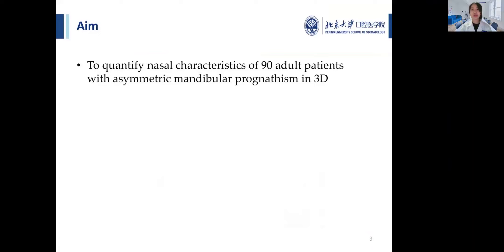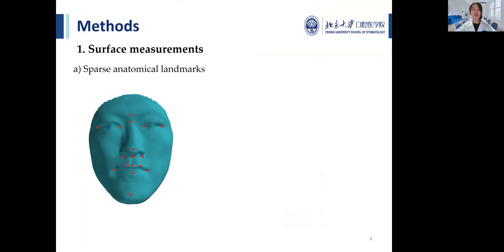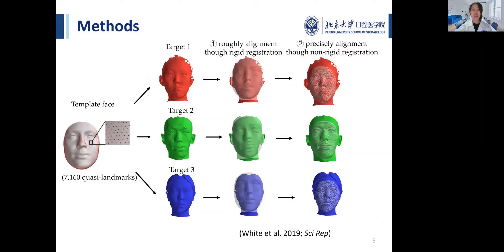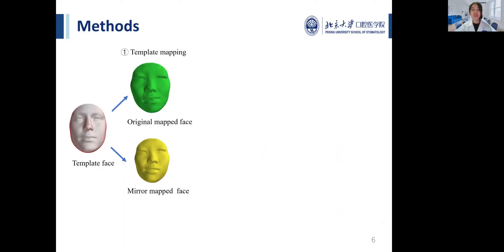First, we perform surface-based analysis. Instead of using manually annotated sparse anatomical landmarks, we use spatially dense quasi landmarks that cover the entire face. The large number of quasi landmarks were automatically identified on each face using a previously validated template mapping technique. If the face is symmetrical, the original face and its mirrored counterpart could be aligned perfectly.